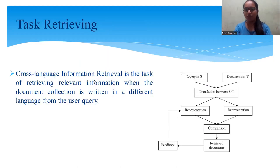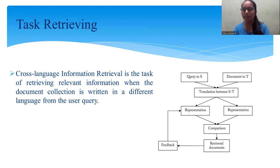For text retrieving, the system sees some queries or document terms, which are represented with some feedback in the corresponding retrieval document. The text is retrieved and documents are collected, written in different forms of language, which are combined and matched against the output of the query from the user.